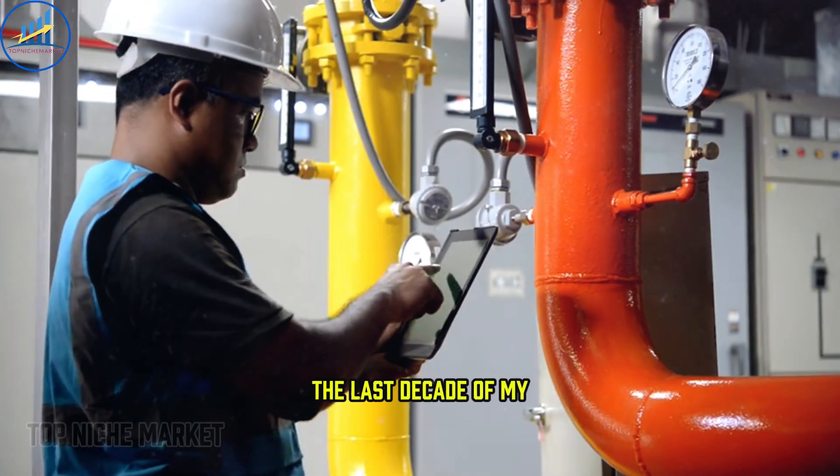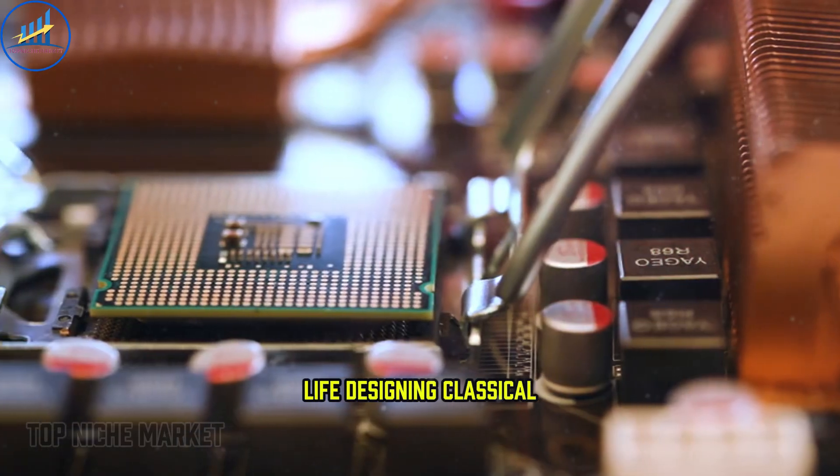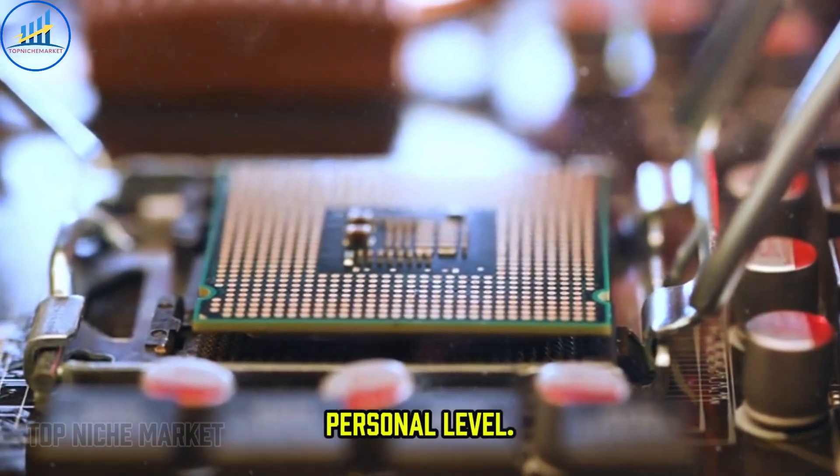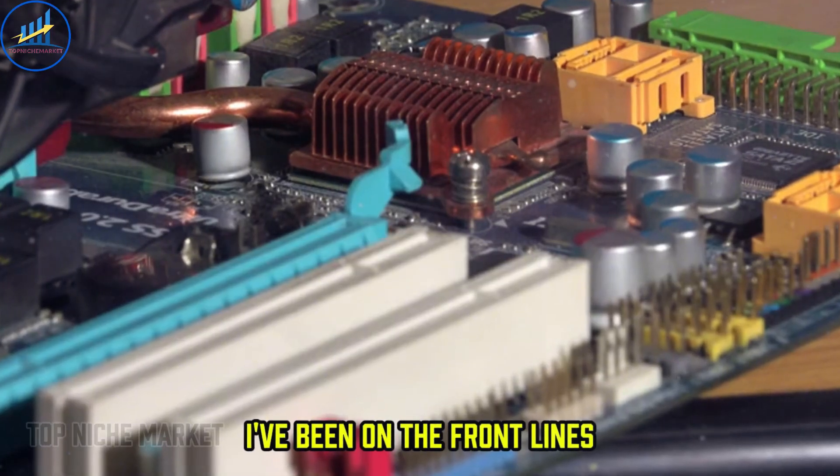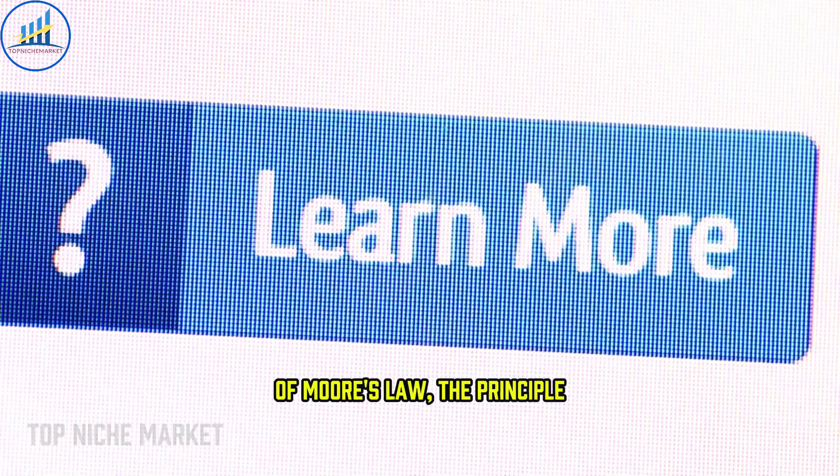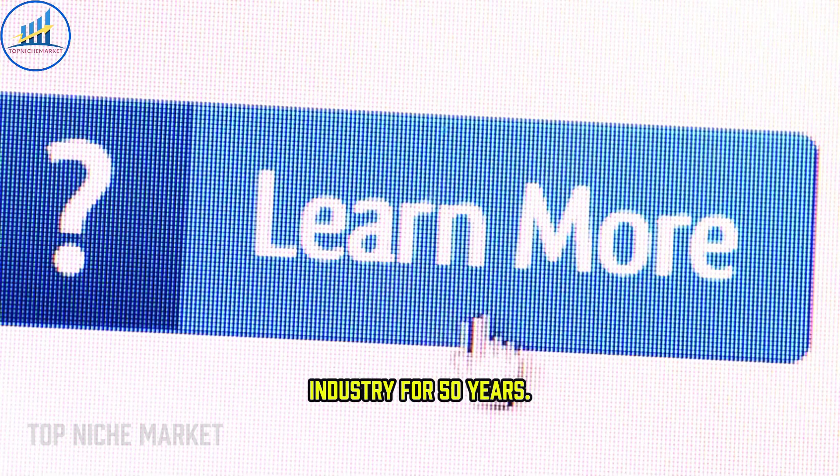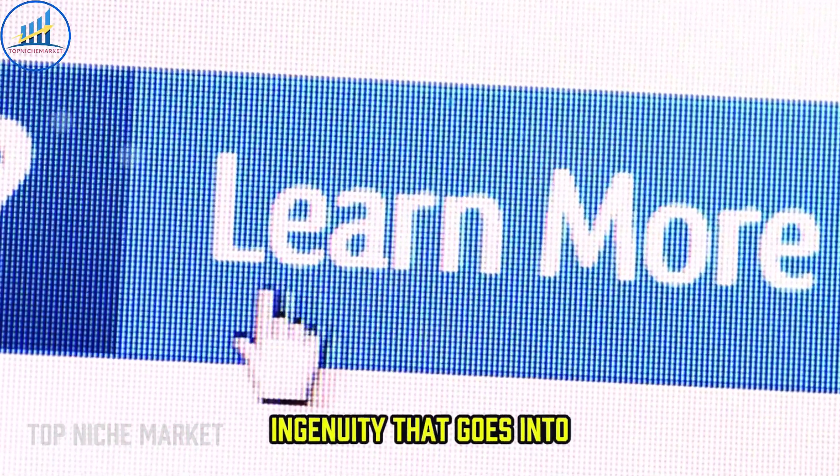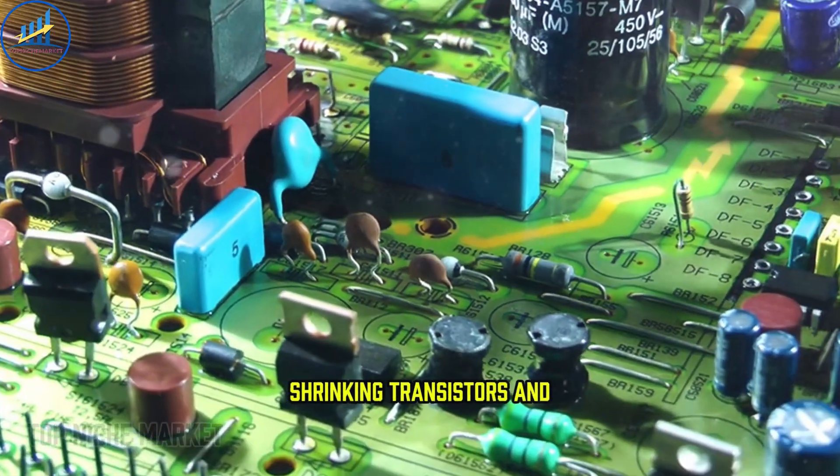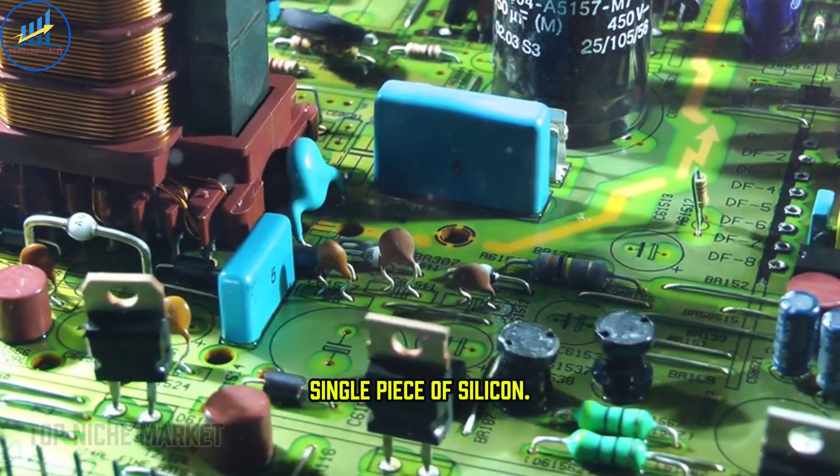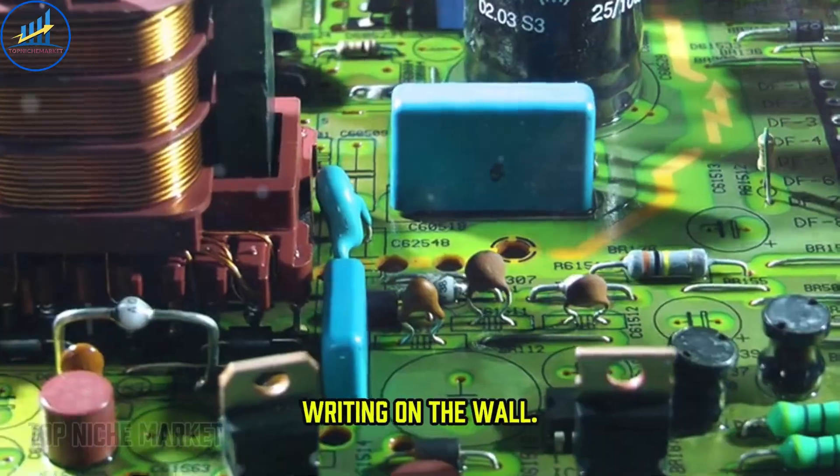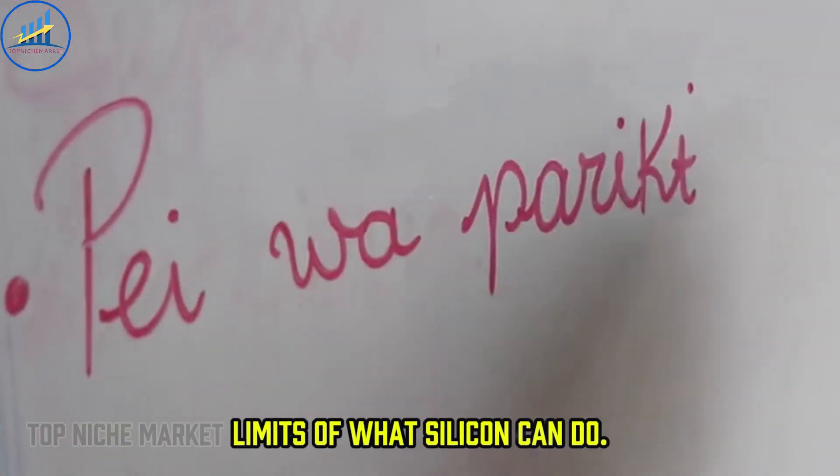As someone who has spent the last decade of my life designing classical computer chips, this story hits me on a deeply personal level. I've been on the front lines of Moore's Law, the principle that has driven the tech industry for 50 years. I've seen the incredible ingenuity that goes into shrinking transistors and cramming more power onto a single piece of silicon. But I've also seen the writing on the wall. We're reaching the physical limits of what silicon can do.